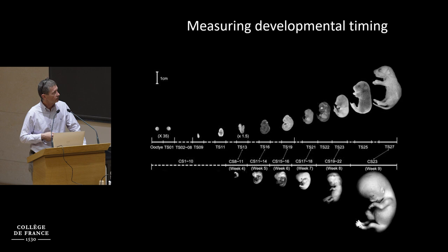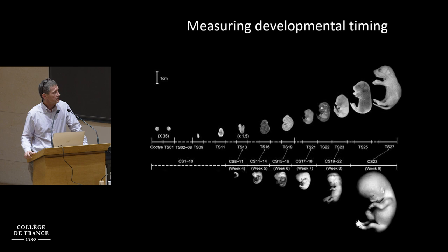For the mouse, these are the Tyler stages. For the human, these are the Carnegie stages. For chicken, that would be the Hamburger-Hamilton stages. Then you try to align these different stages between species. But this is not a very precise way to do it because not all organs develop at the same pace in species — that's what is usually called heterochrony — which makes it quite difficult to compare.